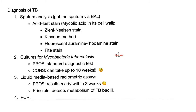How can we diagnose tuberculosis? Get a sample. Where can I get the sample? From the sputum, because the most commonly affected organ is the lungs. How do I get the sputum? From coughing — but better is to go deeper: bronchoalveolar lavage.